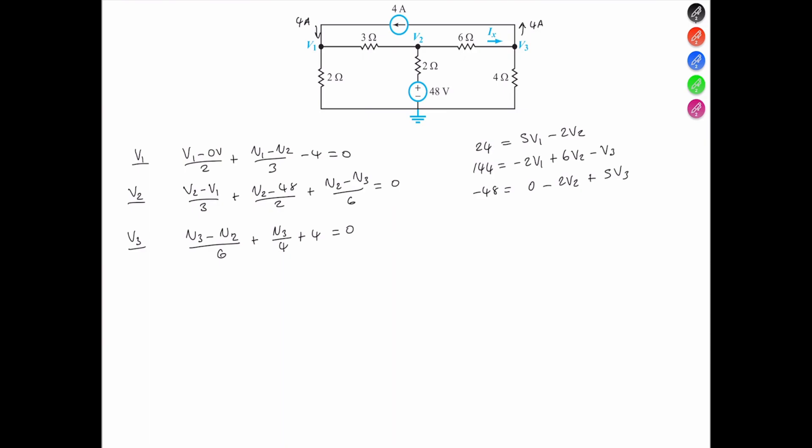You can solve these equations by hand, or you can punch them in a calculator, but simultaneously solving these will lead to V1 equals 84/5 volts.